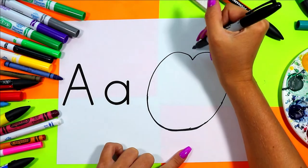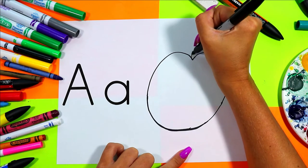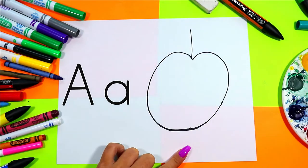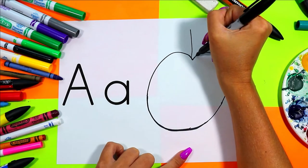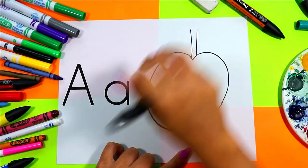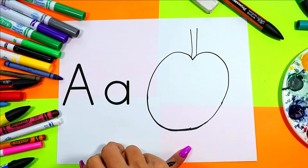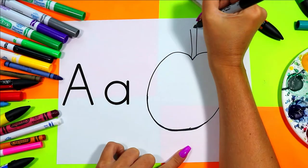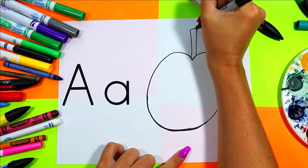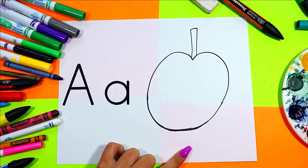At the top we're going to draw one line up. We're going to draw a second line up, and we're going to connect our apple's stem with one straight line across.